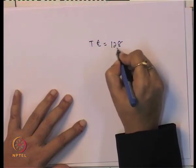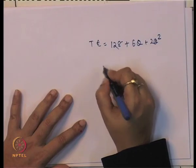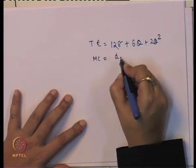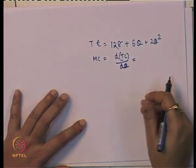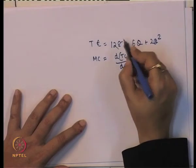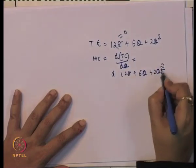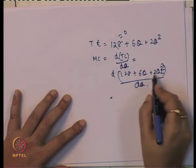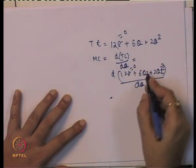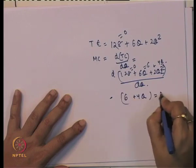To find marginal cost: d(TC)/dQ applied to TC = 128 + 6Q + 2Q² gives MC = 6 + 4Q, since the constant term 128 becomes zero and the derivative of 6Q is 6 and of 2Q² is 4Q. So marginal cost is 6 + 4Q.